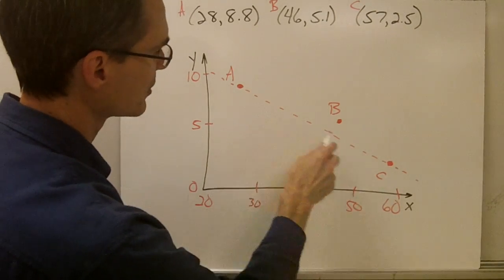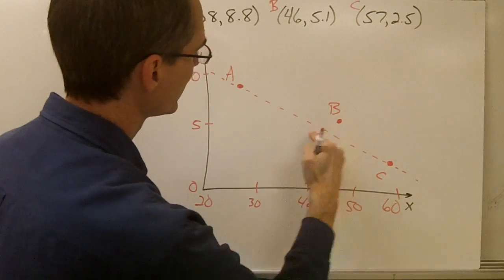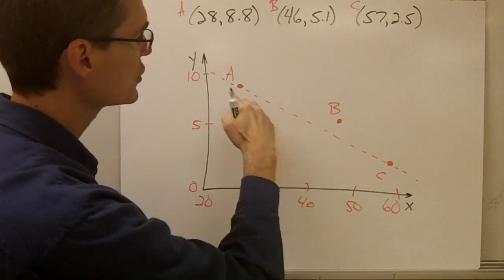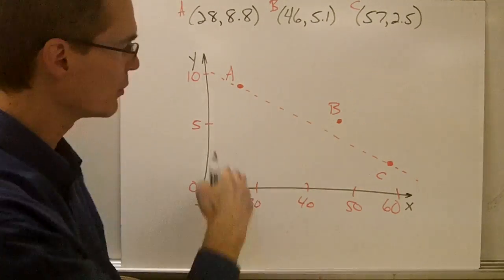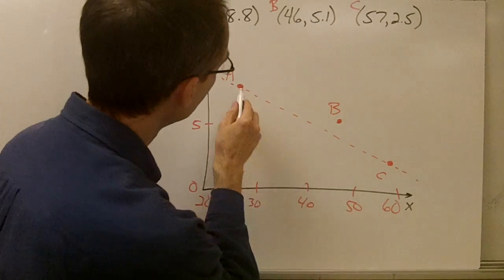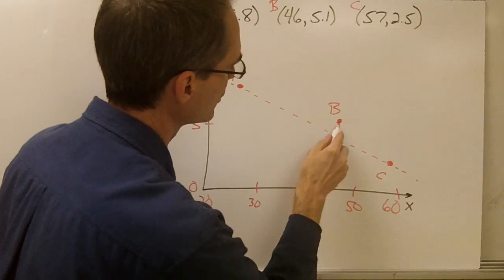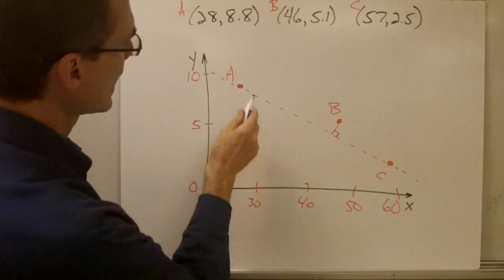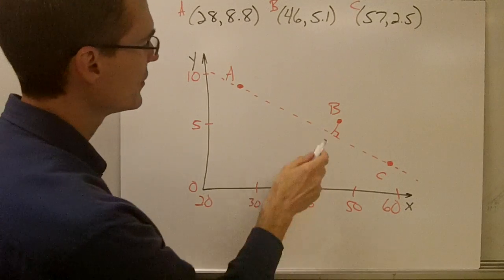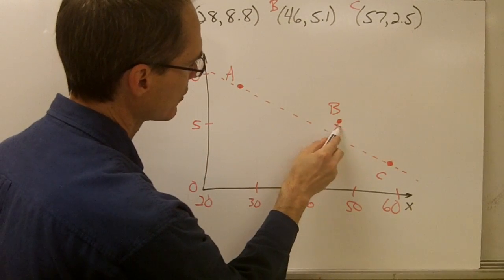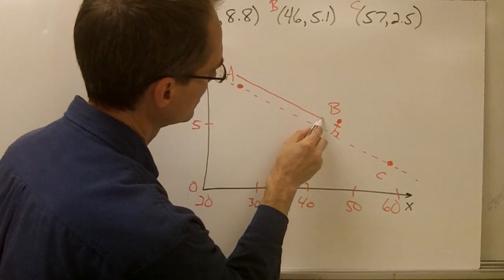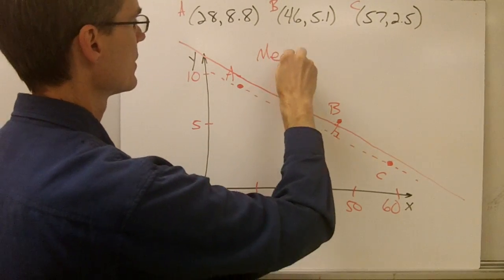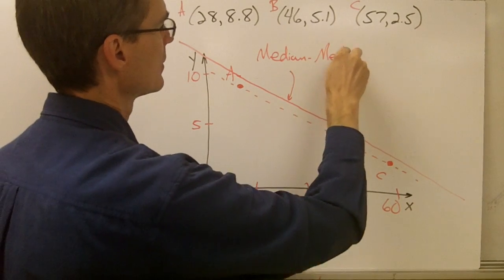After it calculates the equation of this line between the two outside points, it essentially moves this line a little bit closer to the third point B. Notice this third point does not lie on this line — we're looking for a line that most closely approximates the whole data set. What your calculator does is calculate the distance from point B to this line, then move it two-thirds of the way closer to that point. This line keeps the same slope, and this resulting line is the median-median regression line.